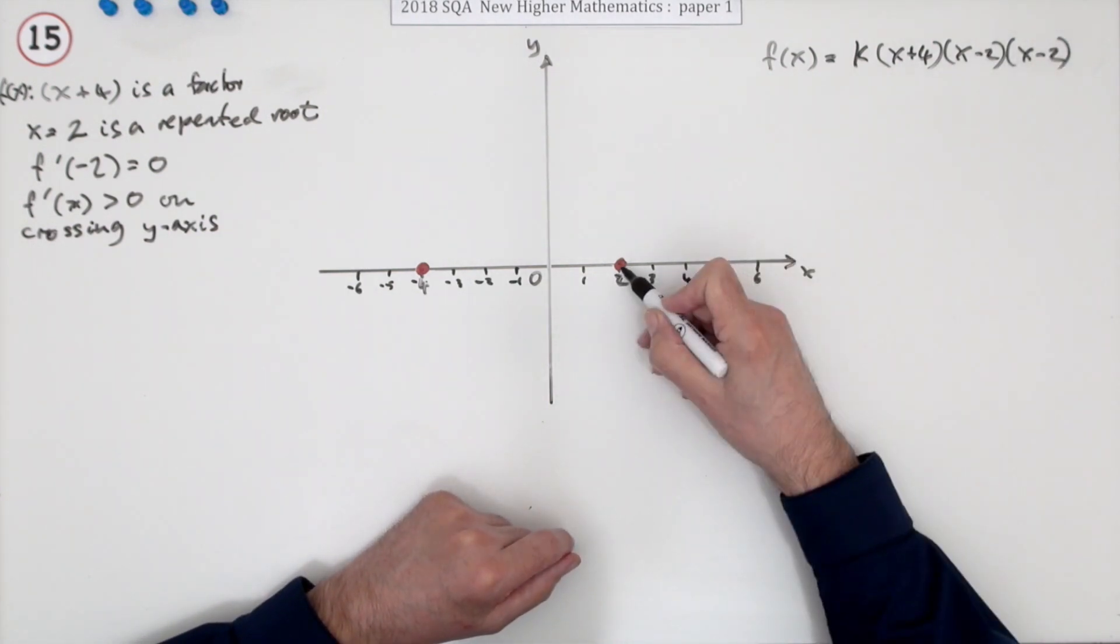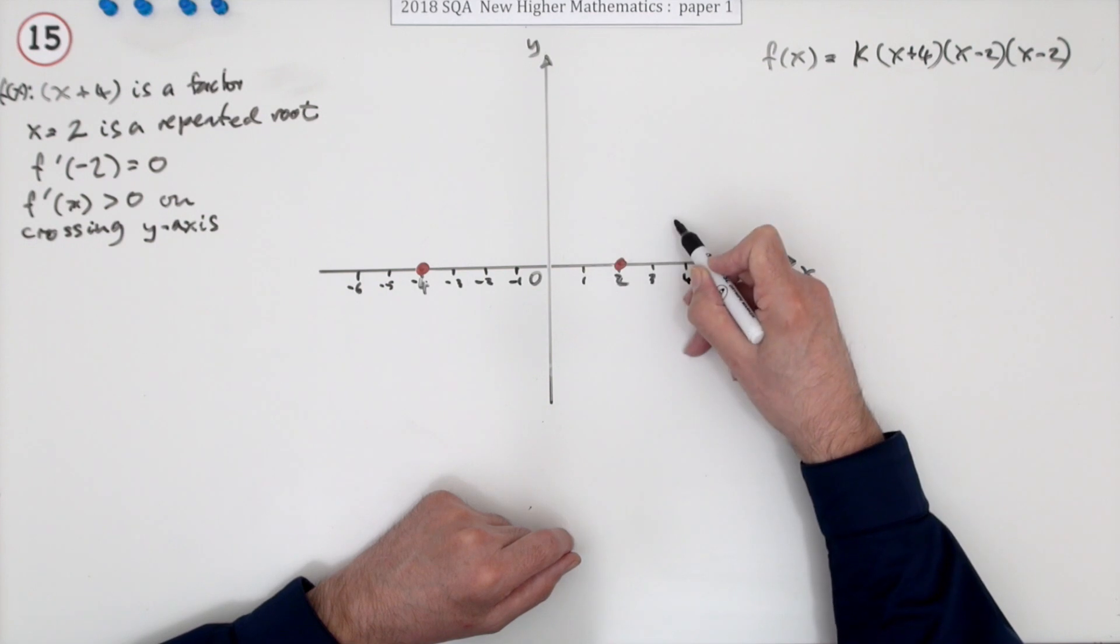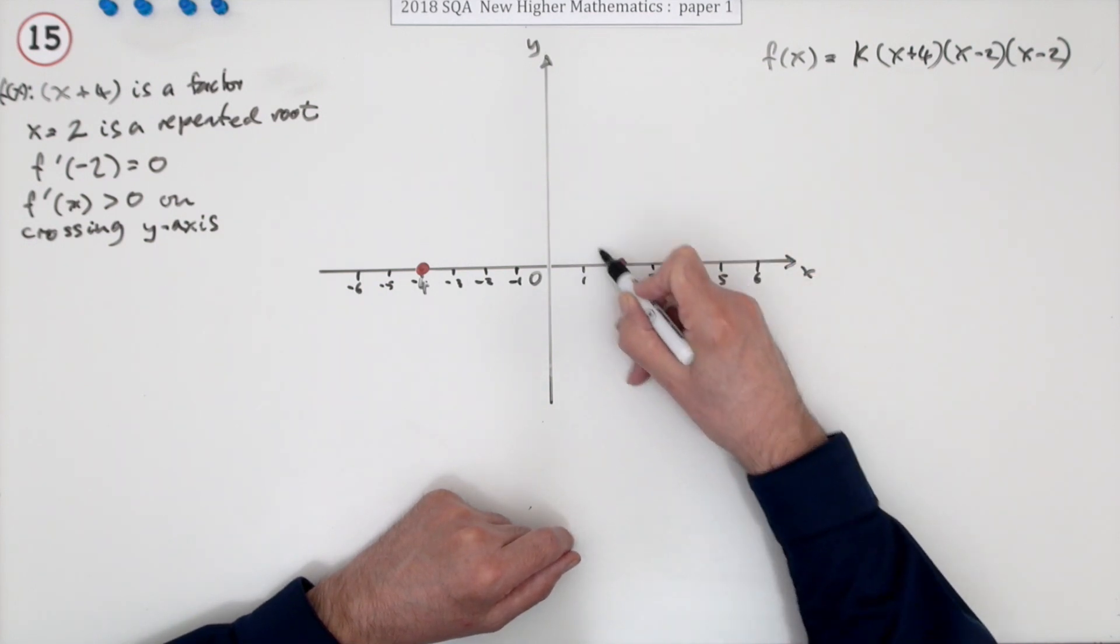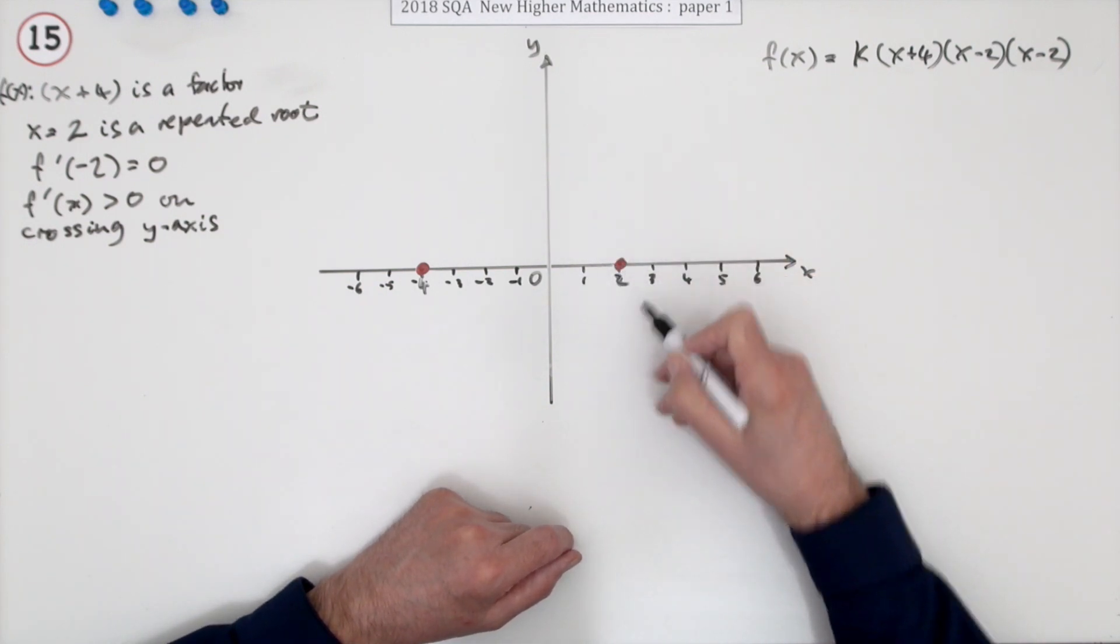So it's like a double hit at that point. That's a tangent point. It's not going to cross through it. It's going to come down and go up, or go up and come down.